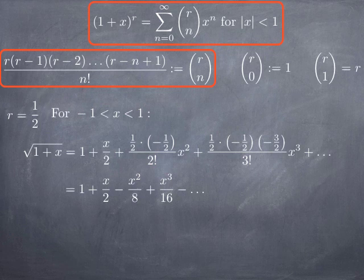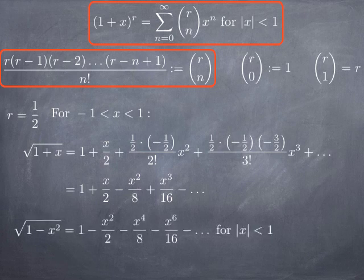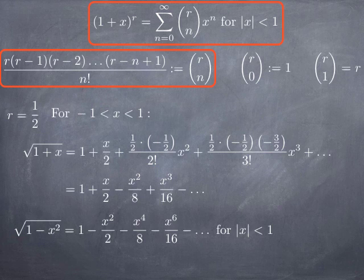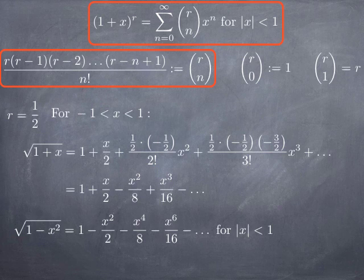We can also substitute other expressions for x. For instance, to get a power series for sqrt(1 − x²), we replace x by −x². Instead of 1 + x/2, we get 1 − x²/2; replacing x² by −x² gives −x⁴/8, which becomes −x⁴/8, and the x³ term becomes −x⁶/16. The condition becomes |−x²| < 1, that is |x| < 1.